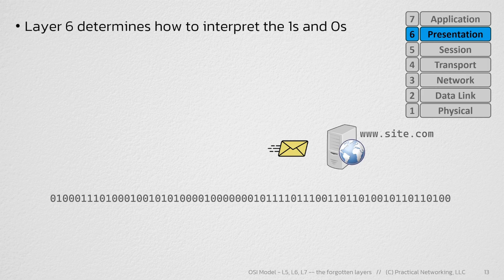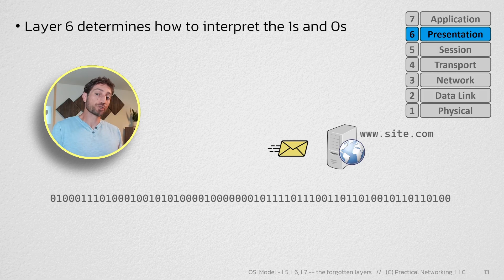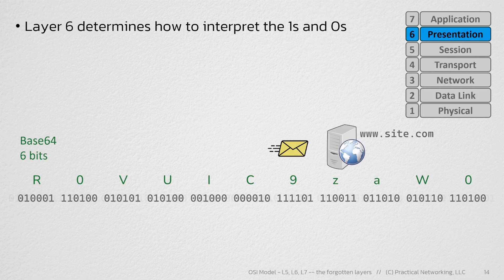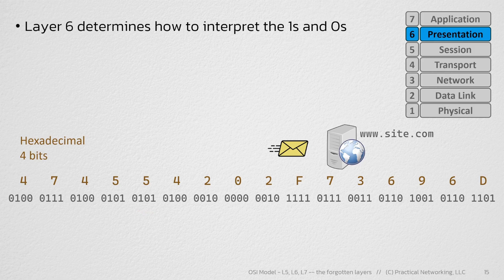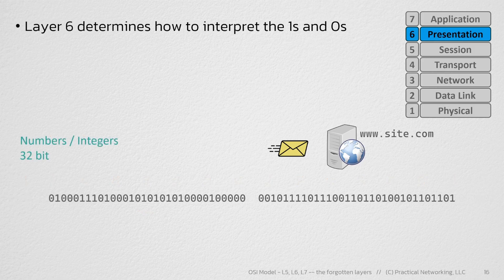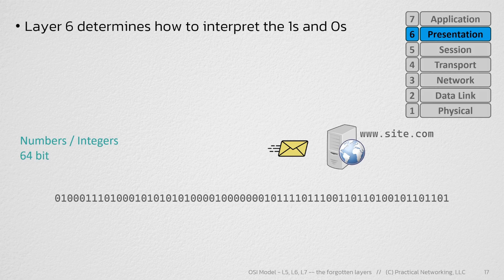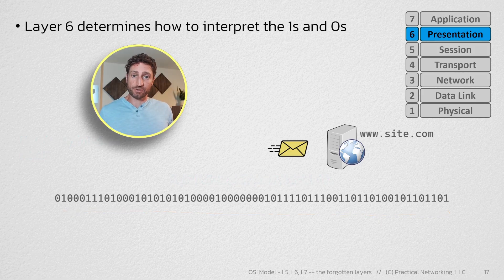What layer 6 does is tell us how to interpret those ones and zeros. There are many ways to interpret them. For example, should we group them in sets of six bits, as base-64 encoding would require, where each combination of six bits turns into a new base-64 character? Or should we interpret them in groups of four bits, as hexadecimal would require, where each group of four bits represents a new hexadecimal character? Or should we interpret them as 32-bit integers — in which case one number would be 1 billion and change, and another would be 796 million and change? Alternatively, maybe we're interpreting them as a single large 64-bit number.